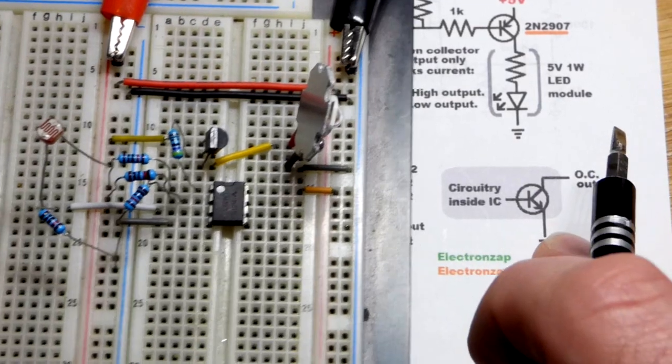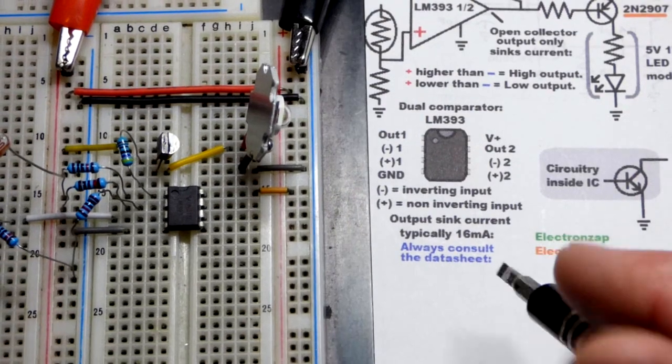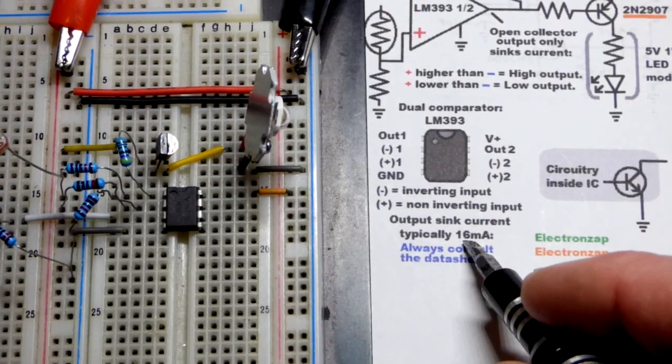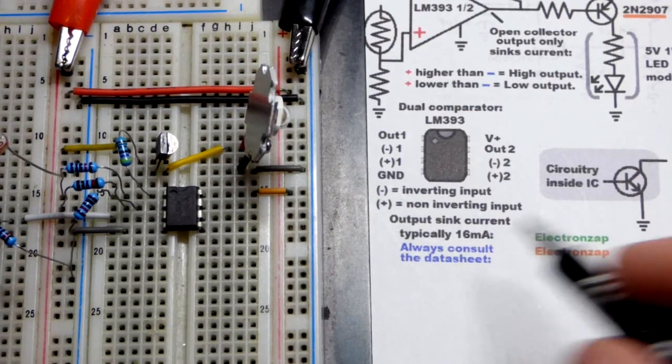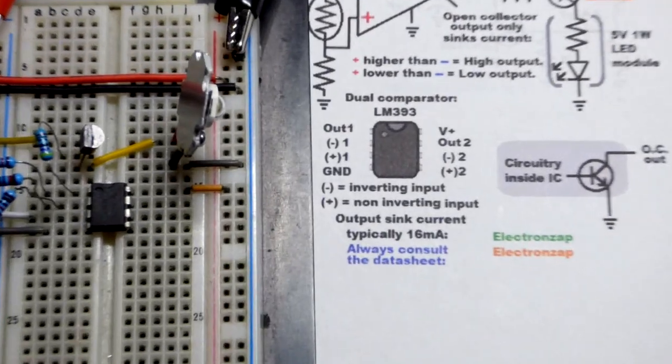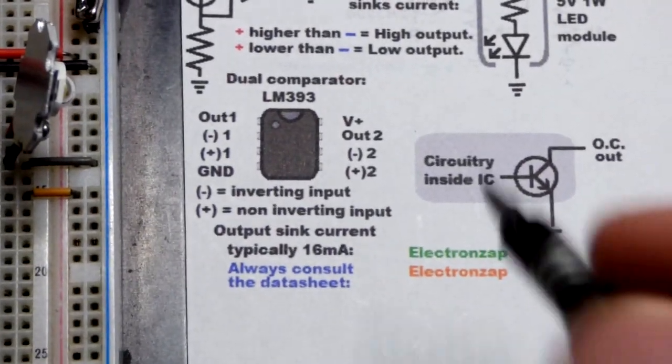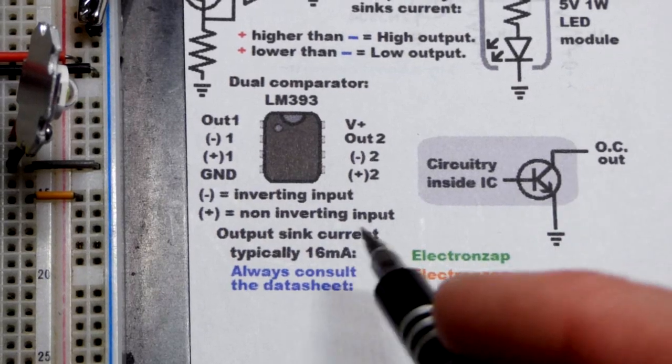Now, we have limited current with this integrated circuit according to the datasheet I looked at, and that is 16 milliamps of current that it can sink. As I said before, it cannot source the current. That's why we have that pull-up resistor. It can only sink it down to ground.